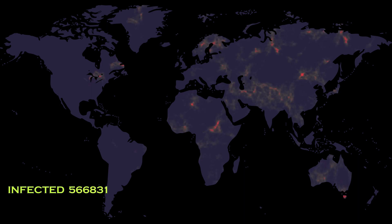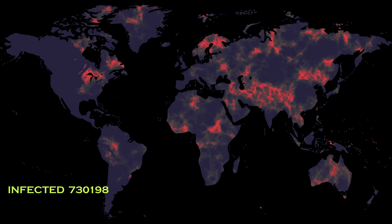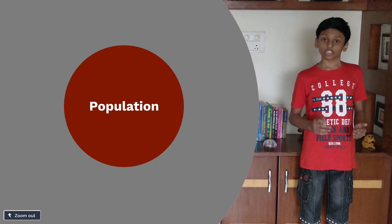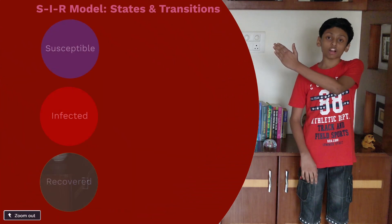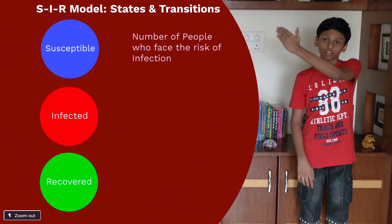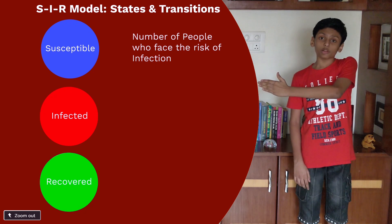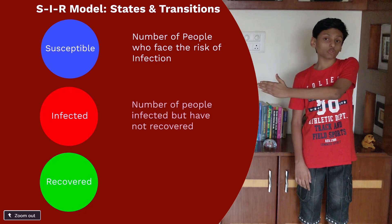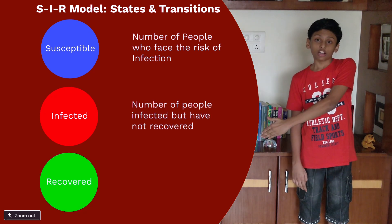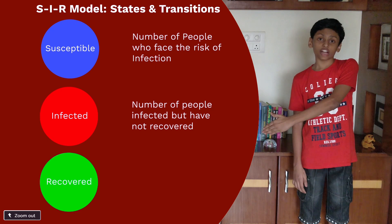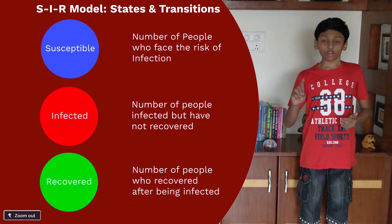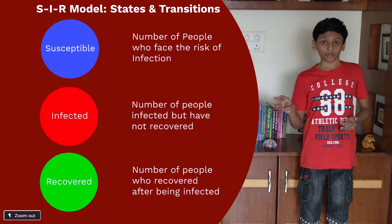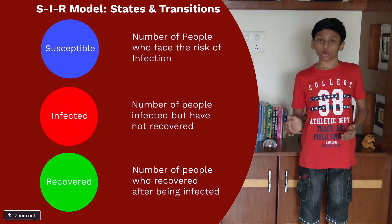The most basic pandemic model, developed using the Markov chain, is the SIR model, where the total population is split into three compartments: Susceptible — the number of people who face the risk of infection; Infected — the number of people who are infected and have not yet recovered; and Recovered — the number of people who were infected earlier and have recovered. Every person is in one of these three compartments and can shift to other compartments over time.